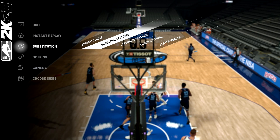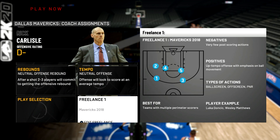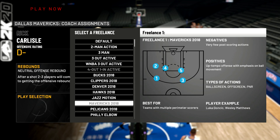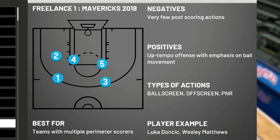We're going to start off in 2KU mode, scrimmage mode, just to show you guys what the freelance looks like. To set up your freelances, go to options, substitutions, coach settings, freelance, and make sure Mavericks freelance is selected. This is the breakdown 2K gives you: negatives are very few post scoring actions; positives are it's an uptempo offense with emphasis on ball movement. Types of actions include ball screens, off screens, and pick and rolls. Player examples are Luka Doncic and Wesley Matthews. This is best for teams with multiple perimeter scorers. Most importantly, you have to push the pace if you're going to run this offense.